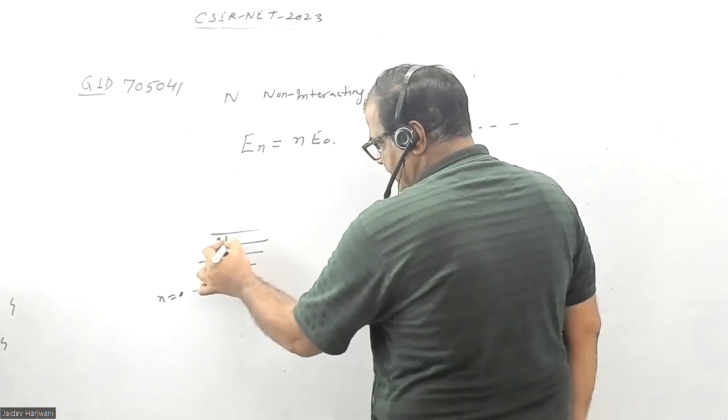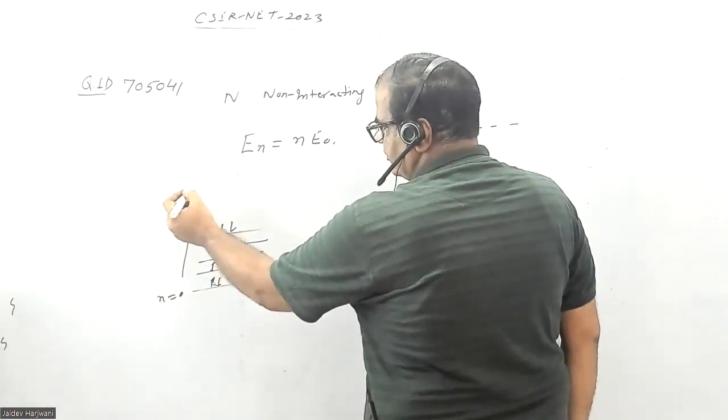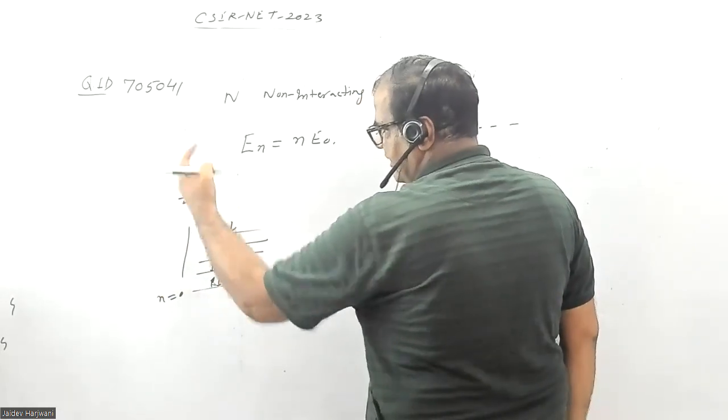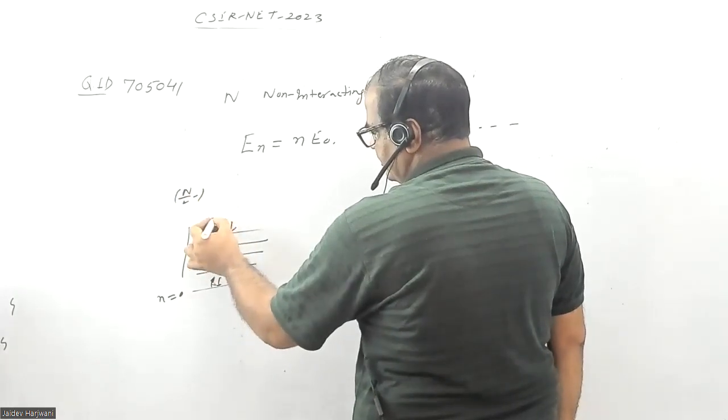I can fill two electrons, spin up and spin down. That means N can go up to N by 2, that is 100 by 2, 50 minus 1. So up to that much level we need to go.